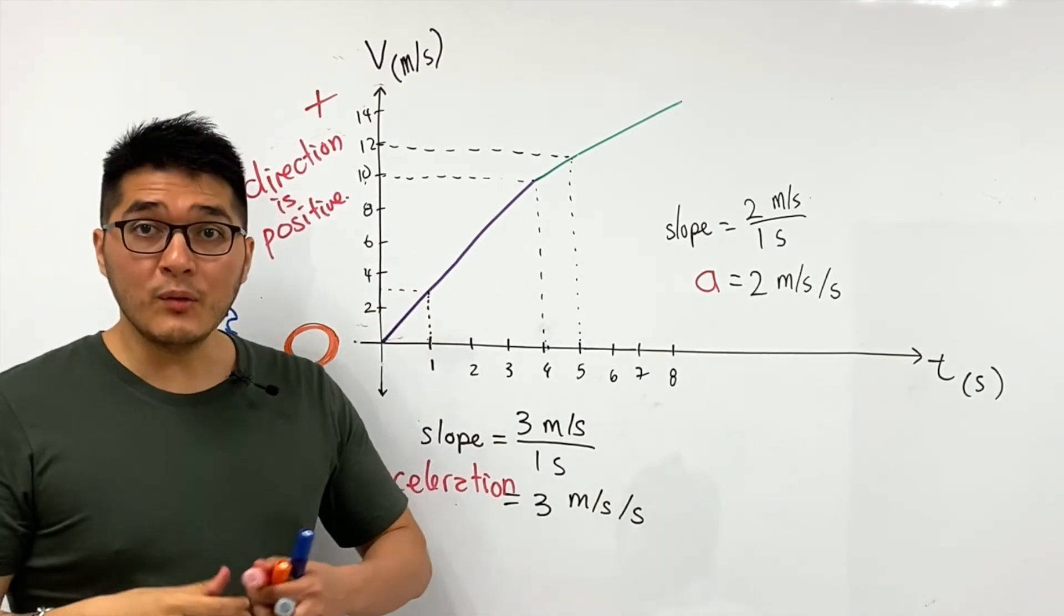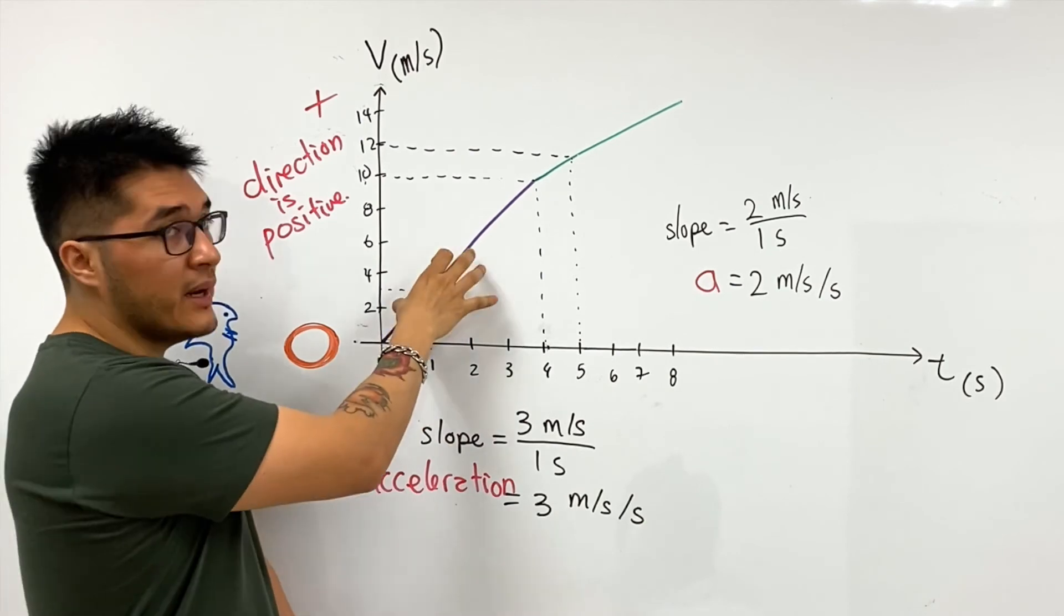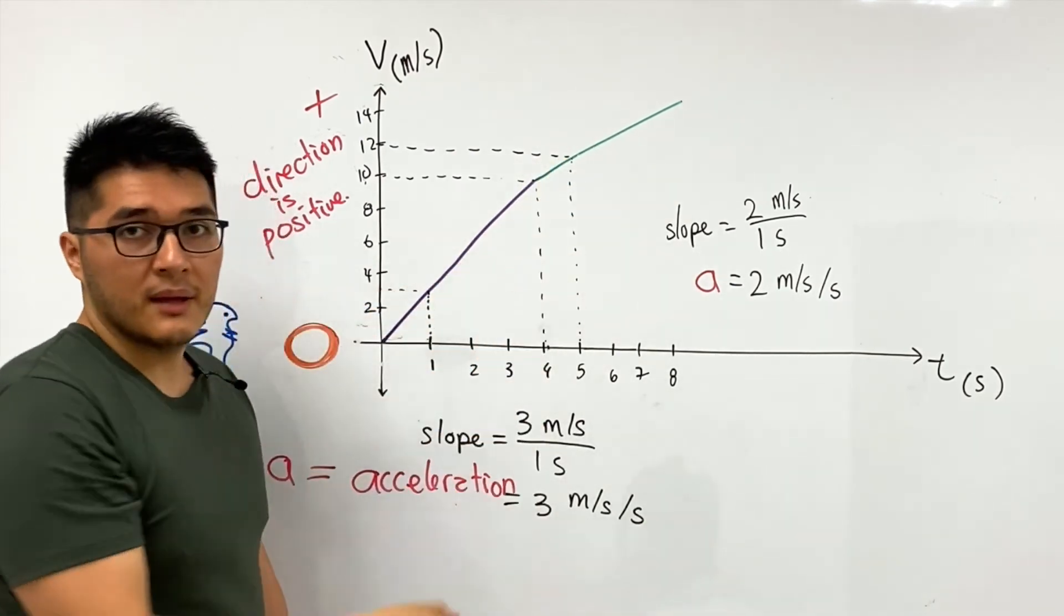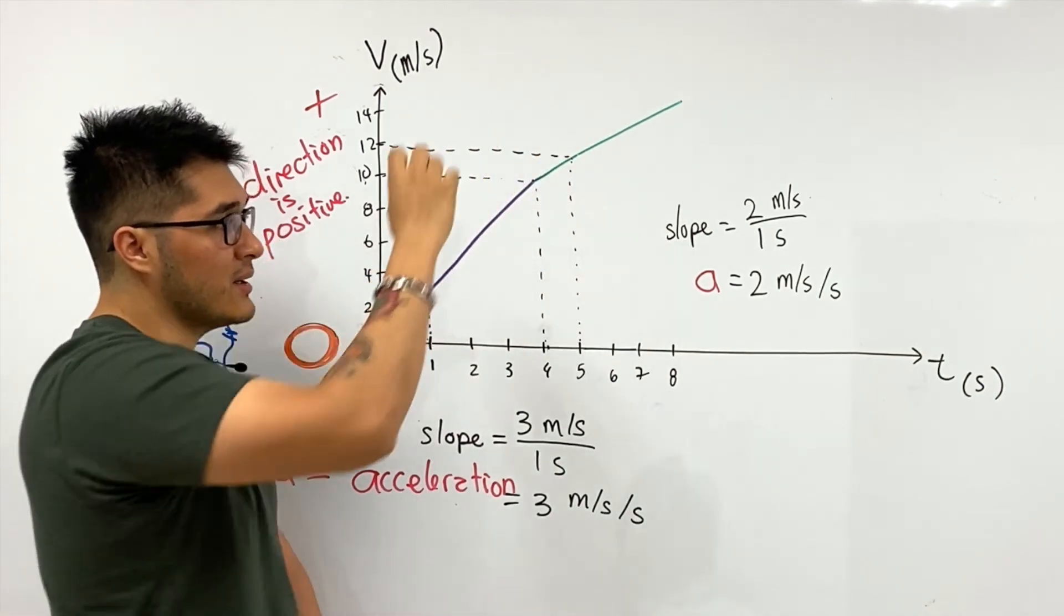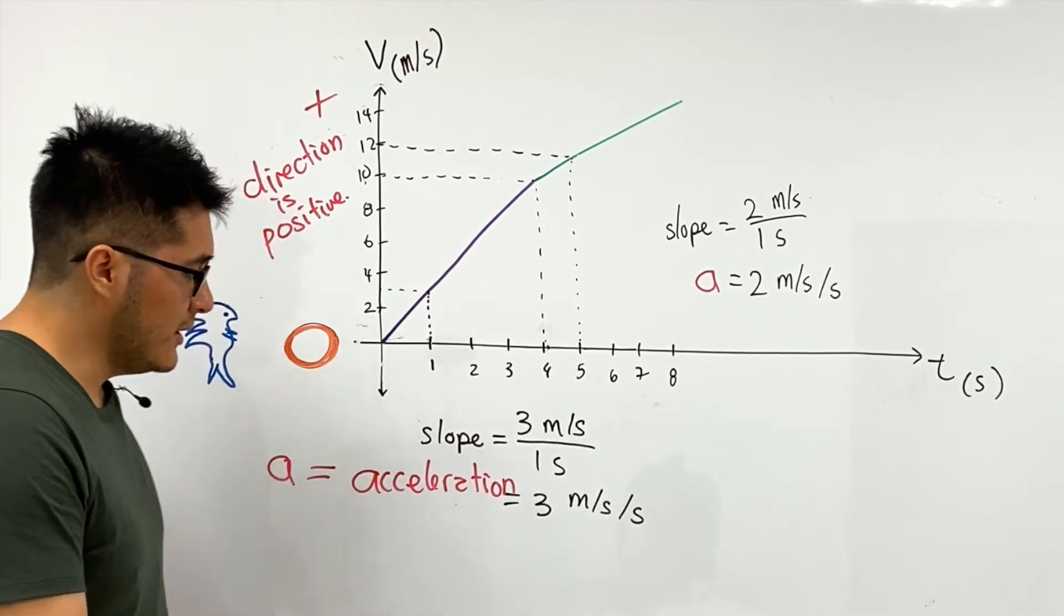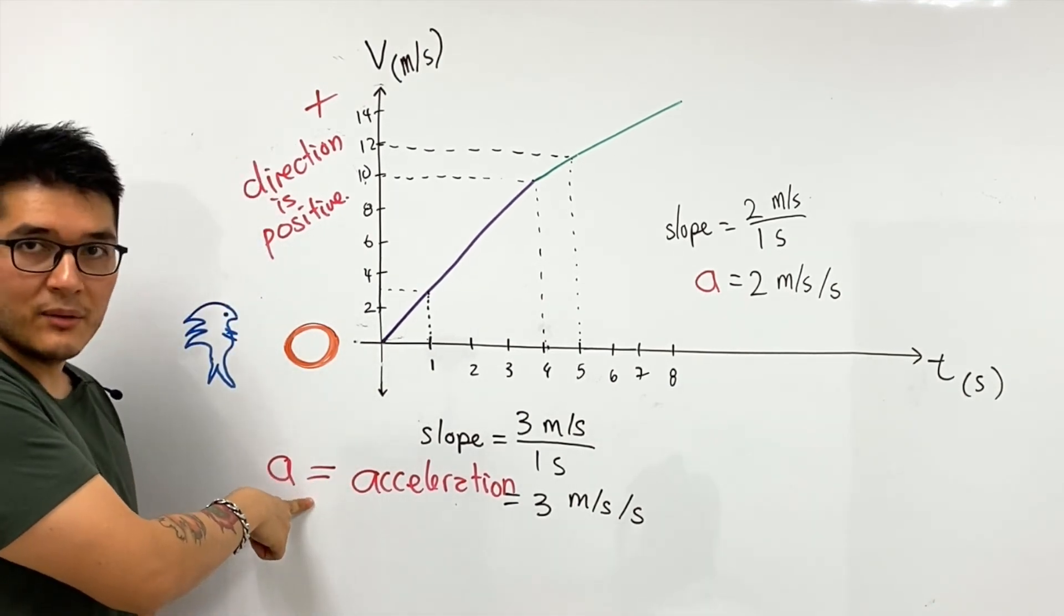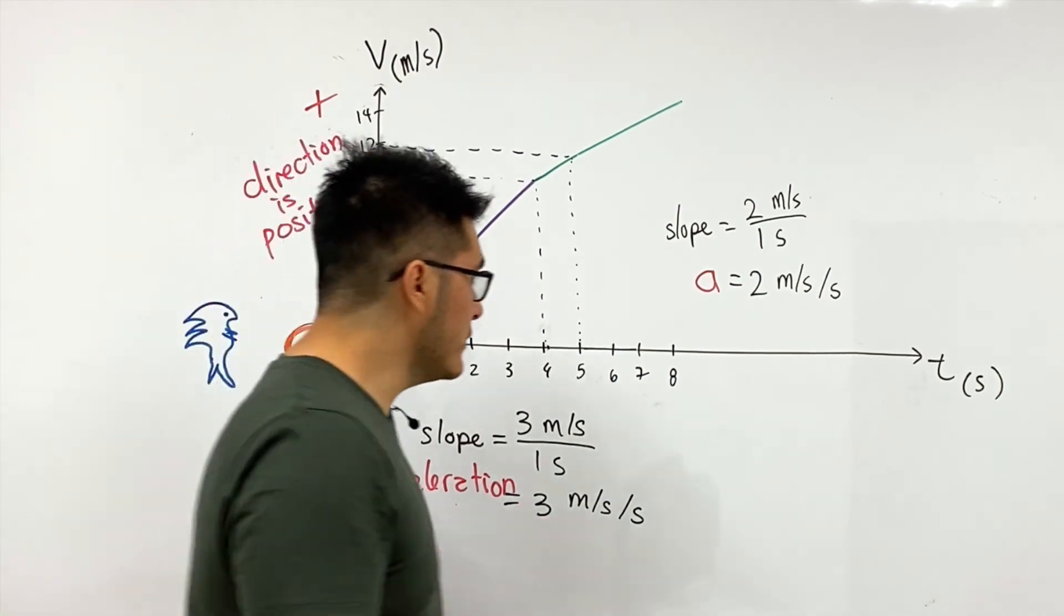So now we can do even better than before. We can tell the type of motion: speeding up, speeding up. We can tell the direction of motion: positive direction, positive direction. But we can even tell how quickly that speeding up occurs by describing acceleration.